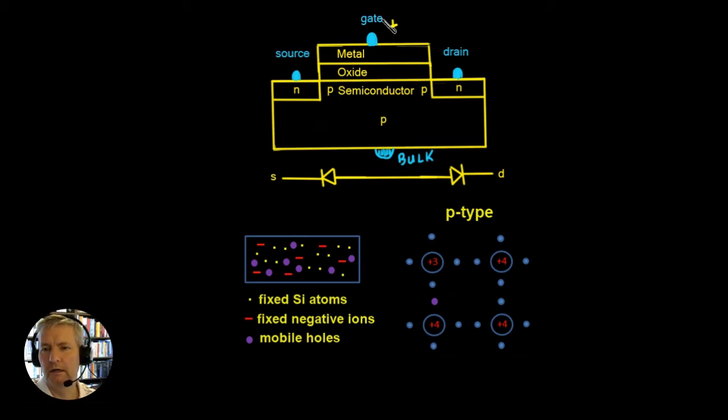And we do that by adjusting the voltage on this gate relative to the bulk. So this is how our metal oxide semiconductor field effect transistor works. We've got a metal, an oxide and a semiconductor layer.